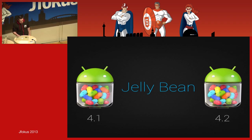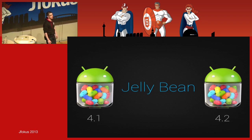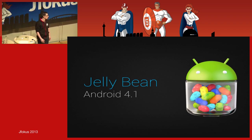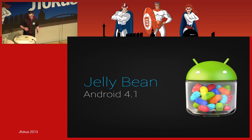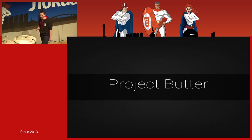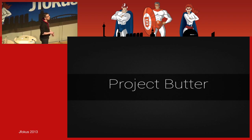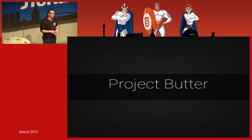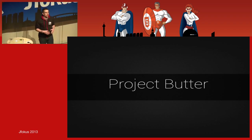I will talk about both versions. The first one is Jelly Bean Android 4.1, which has been released six months ago during Google I/O 2012. In this version, one of the main projects was Project Butter — and yes, that's the actual name. The initiative behind this project was to make Android smoother, with no hiccups, no stutters, which was one of the biggest issues people were complaining about.